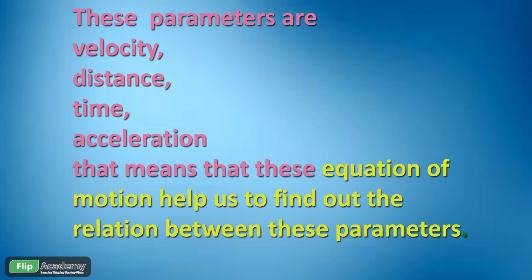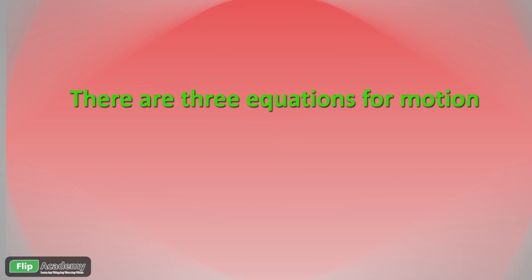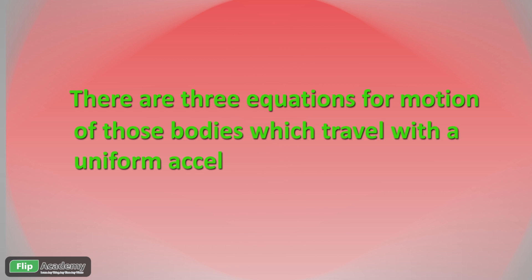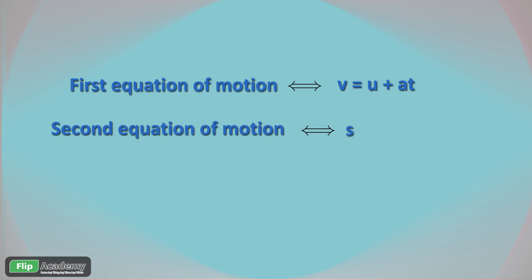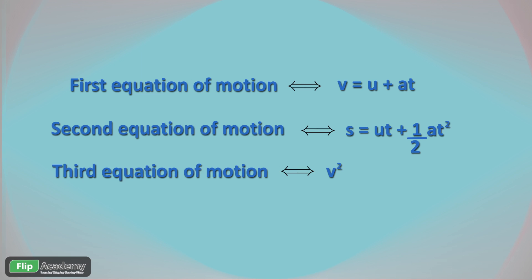Now let's move on — there are 3 equations of motion, and these three equations are defined for bodies that travel with uniform acceleration. The first equation of motion is given by V equals U plus AT. The second equation of motion is given by S equals UT plus half AT squared. The third equation of motion is V squared minus U squared equals 2AS.